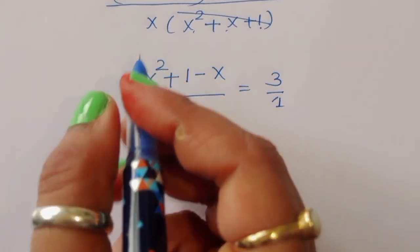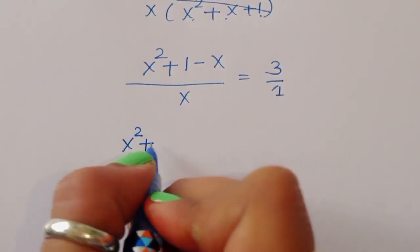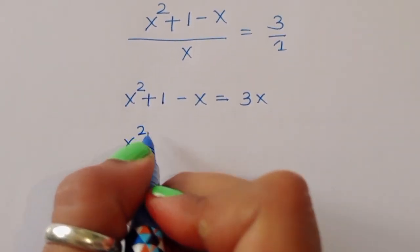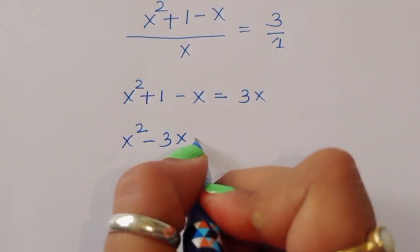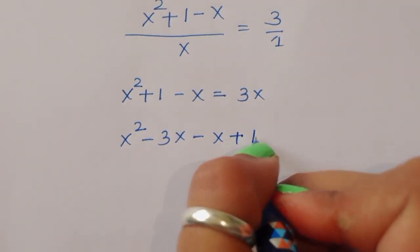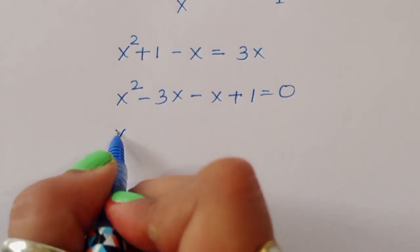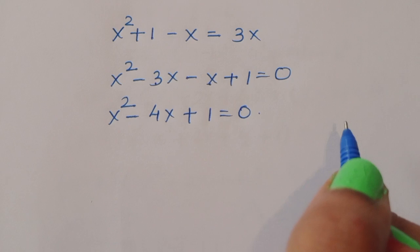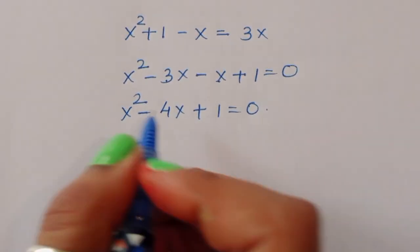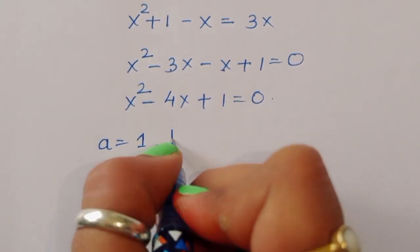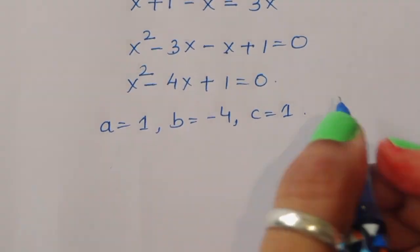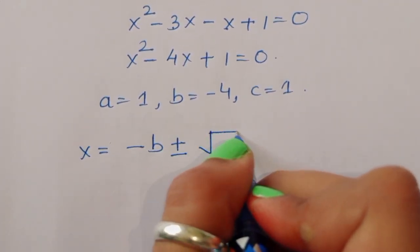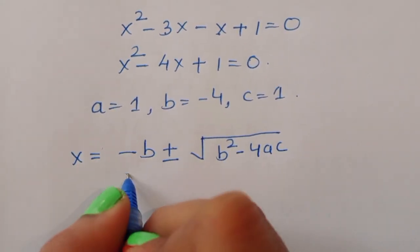Cross multiplying gives x² + 1 - x = 3x, which rearranges to x² - 4x + 1 = 0. Using the quadratic formula with a = 1, b = -4, and c = 1: x equals minus b plus or minus the square root of (b² - 4ac), all divided by 2a.